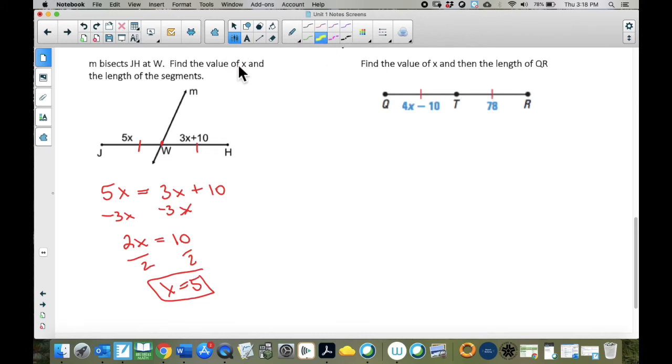That's not the whole question. The question asks us to find the value of X, did that. But it also wants the length of the segments. So now how do we do that? Well, we plug it back in. So if we know that X is 5, I'm going to plug in a 5, and that's going to give me 5 times 5, which is 25. So I'm going to give my answer, JW is equal to 25. When it's the length, a number, you don't put a bar over it. Now I have to find this one. I have two ways of finding this one. The first way is super easy, and that is that WH is equal to 25. How do I know that so fast? Well, because they're equal. And if this is 25, this is 25. If you forgot that, you could plug in your 5 here, and that would give you 3 times 5 plus 10, which is 15 plus 10, which is 25, which is what I said a second ago.